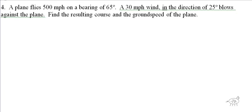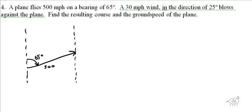Last problem: a plane flies 500 miles per hour on a bearing of 65 degrees. A 30-mile-per-hour wind in the direction of 25 degrees blows against the plane. Find the resulting course and ground speed. As soon as you see the word bearing, draw that bearing line. Here's the 65-degree bearing line — 500 miles per hour. Then a 30-mile-per-hour wind bearing line drawn at the tip of the plane — that's 25 degrees and 30 miles per hour. This is actually tip-to-tail already.